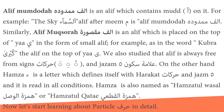Alif mamdoodah is an alif which contains madd on it. For example, in 'as-sama'u' (the sky), the alif after meem is alif mamdoodah. Alif maqsura is an alif placed on top of ya in the form of a small alif — for example, in the word 'kubra'. Alif is always free from signs or harakat. Hamzah, on the other hand, defines itself with harakat and jazm, and is read in all conditions. Hamzah is also named hamzatul wasal or hamzatul qat'i.